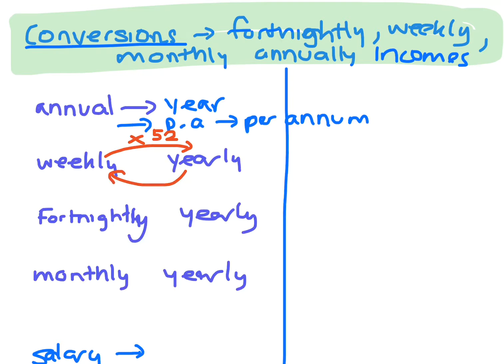And if you want to go back to weekly, you divide by 52. Because one year is 52 weeks.